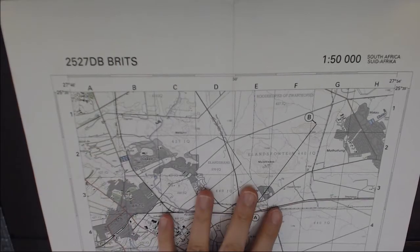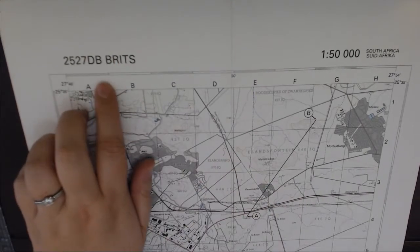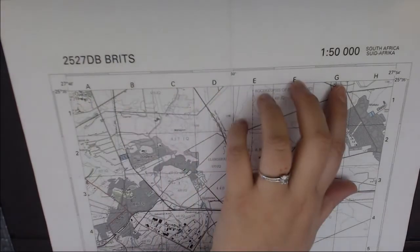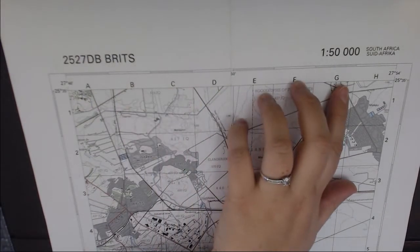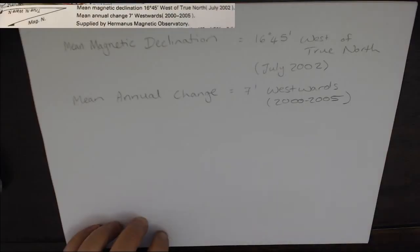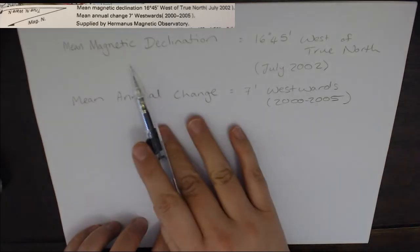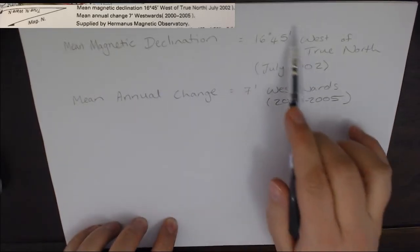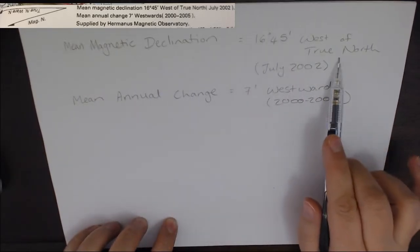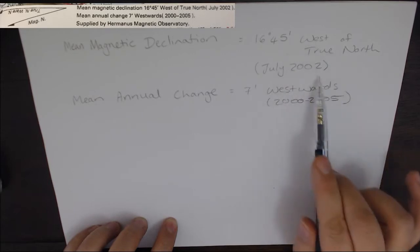We're going to be using our Brits map here. You can see we've got the map code, map title, and we're using a 1:50,000 map. This is what you will see on your map: a mean magnetic declination, which is what the magnetic declination was when it was calculated in 2002.